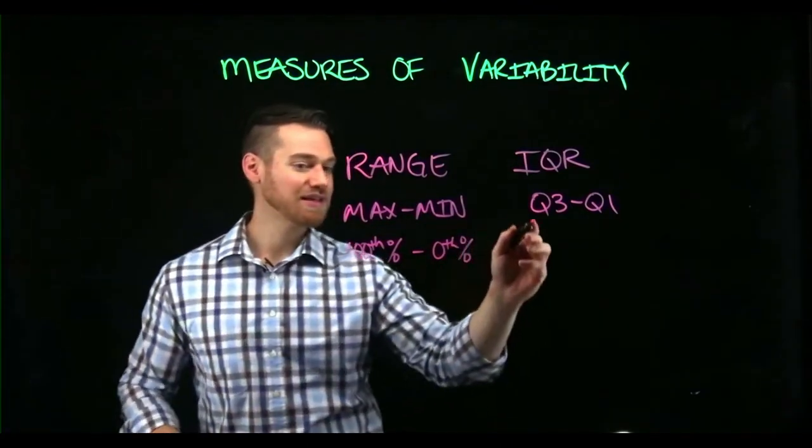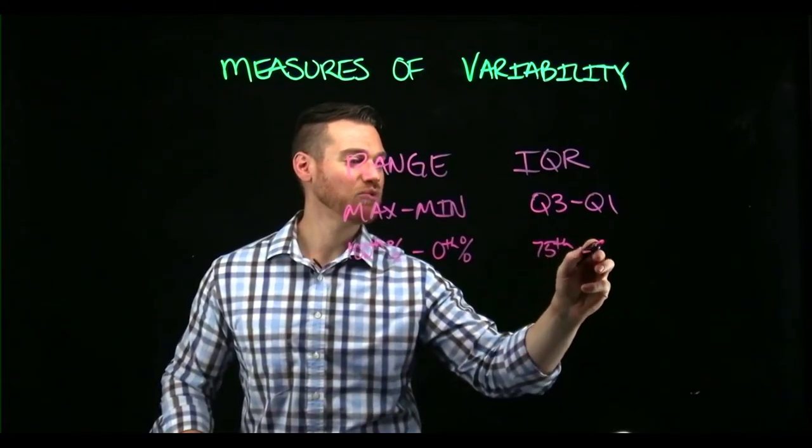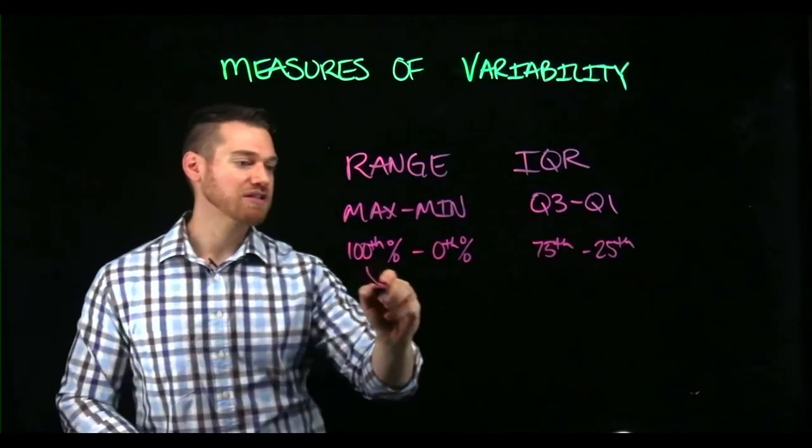Q3 is the 75th percentile and Q1 is the 25th. So the range gives us the total span.